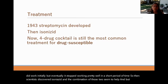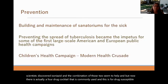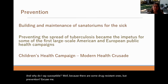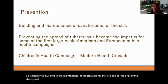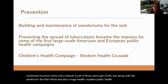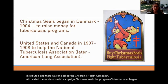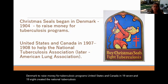Prevention included building and maintaining sanatoriums, changing women's skirts, and reducing men's beards. There were also huge health crusades and public health information campaigns. One called the Children's Health Campaign, also called the Modern Health Campaign, distributed widely. The Christmas Seals program began in Denmark to raise money for tuberculosis programs. The United States and Canada in 1907 and 1908 created the National Tuberculosis Association, which later became the American Lung Association.